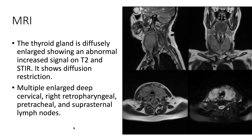On MRI, we see that the thyroid gland is diffusely enlarged, with high signal on T2-weighted imaging. The thyroid also shows diffuse diffusion restriction on DWI.